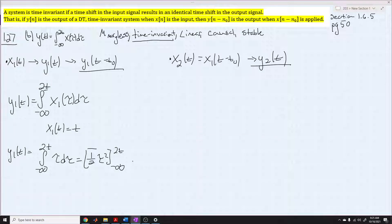If we did that, we'd have y1 of t is equal to from negative infinity to 2t, and it would be tau d tau, and that equals 1 over 2 tau squared. And then we want to evaluate that at 2t and negative infinity. So we can see here that we're going to get, our y1 of t, it pretty much gives us another formula, you could call it.